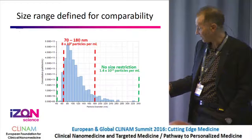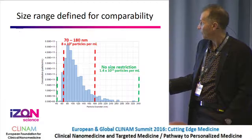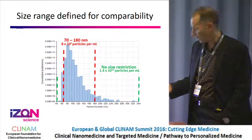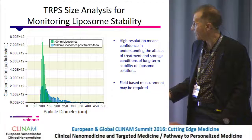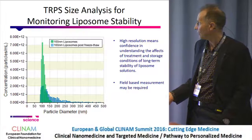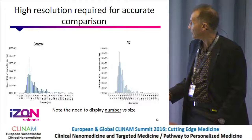For extracellular vesicles, if you just give a number and you're only measuring between the two red lines, that number will be different from what is actually there, because there are always some particles below or above what is being measured, no matter what the technique. This shows liposome stability: when you have particle number on the y-axis as well as size — here looking at post freeze-and-thaw — the profile changes. If you just have percentage, you miss that detail.